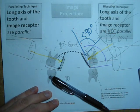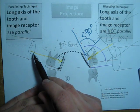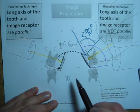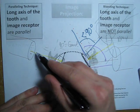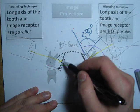Same thing for the paralleling, except now you would be aligning and thinking about the long axis of the film.